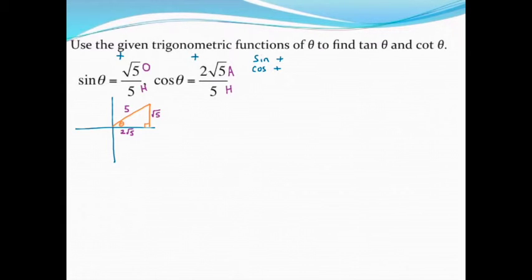Now that I have all three sides set up, finding the tangent of theta and the cotangent of theta shouldn't be too bad at all. Tangent equals opposite over adjacent. The opposite side is square root of five, and the adjacent side is two square root of five.